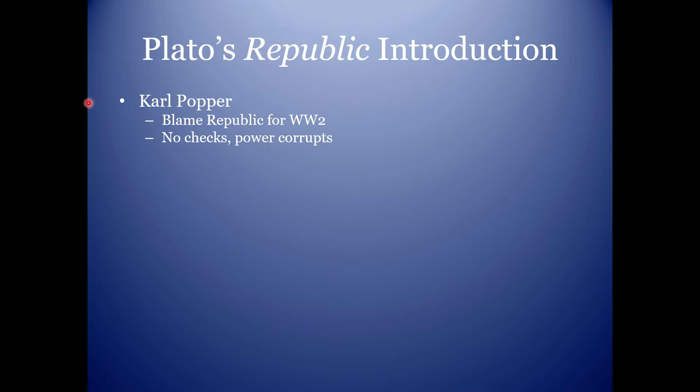Popper takes the liberal axiom that power corrupts. This is from Lord Acton — a liberal philosopher from England — who said 'power corrupts, and absolute power corrupts absolutely.' It's a liberal idea that you can never have concentrated power because it will corrupt you, so we must abolish the government or make it weak.